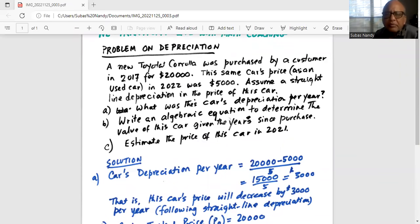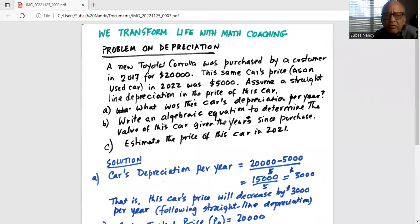A new Toyota Corolla was purchased by a customer in 2017 for $20,000. The same car's price as a used car in 2022 was $5,000. Assume a straight line depreciation in the price of this car. What was the car's depreciation per year?